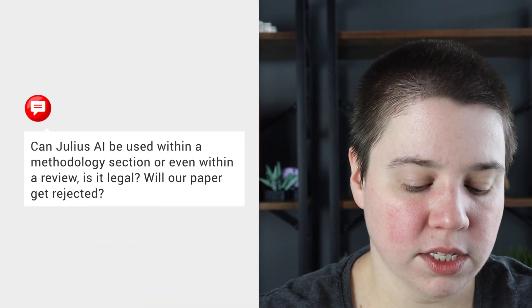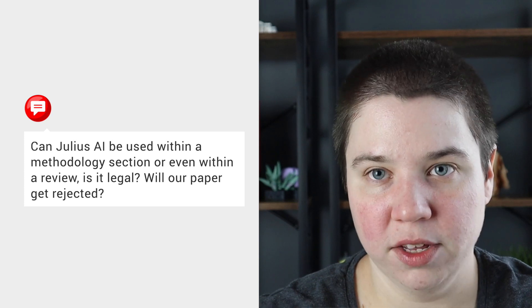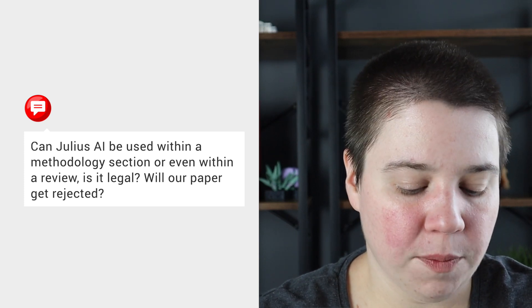The next question is about Julius AI — whether this tool could be used within a methodology section or even within a review, whether it's legal, and whether your paper will get rejected. With something like Julius AI, I personally would not put it within my methods section. What I would do is use Julius AI to generate the code, and then run the code again through my own Python or R — Julius AI now does R — to make sure that it is accurate. I would make sure I understand the code that was generated, using it to help me develop code more quickly, not necessarily to actually do my data analysis.